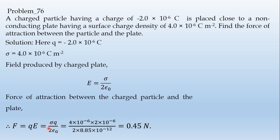So sigma q divided by 2 epsilon 0. Epsilon 0 is the constant, 2 times 8.85 into 10 to the power minus 12. We're going to use the value of sigma.